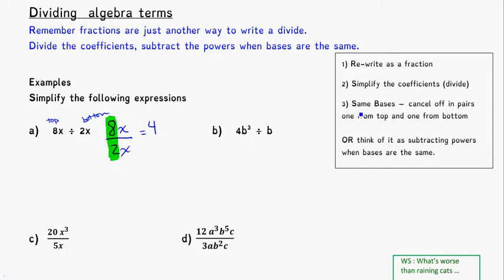And the next thing I'm going to look for is, are my bases the same? And in this case they are. I have an x on top and an x on bottom. So what I can do is I can cancel them off in pairs. I'll take one off the top and one off the bottom. So I'll cancel that and cancel that, meaning there's no x's left over and my answer is just 4.